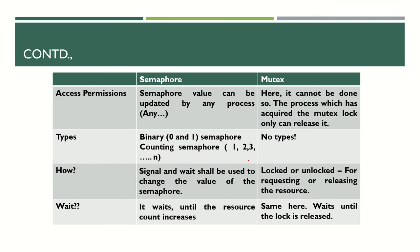Types of semaphores: binary semaphore and counting semaphore. Binary semaphore is about one resource — zero means unavailable, one means available. Counting semaphore: if I have five printers, the value is five. When the first printer is occupied, it becomes four; second occupied, three; and so on. When a printer is released, the count increases. Any process that acquires or releases a resource can update this value. Mutex has no types — there is only one type.